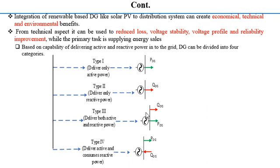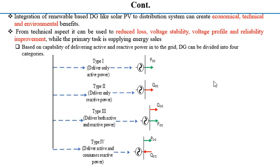Based on the capability of delivering active and reactive power, DG can be classified into four types. Type 1 can deliver only active power; type 2, only reactive power; type 3, both active and reactive power; and type 4 delivers active power while consuming reactive power. Solar PV is a type 1 DG.